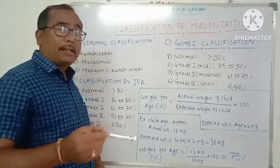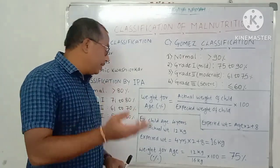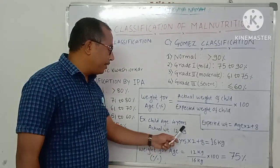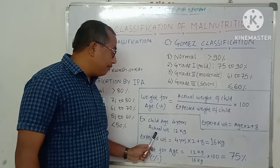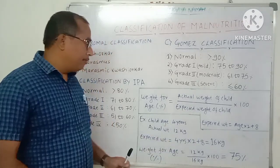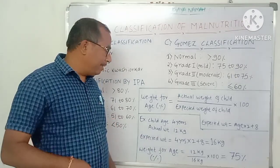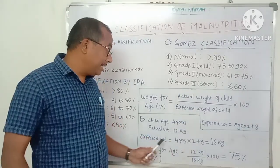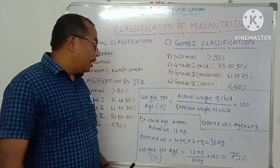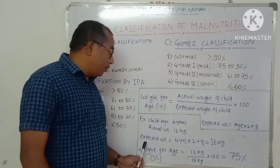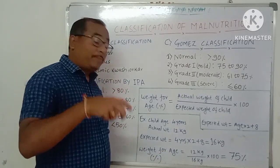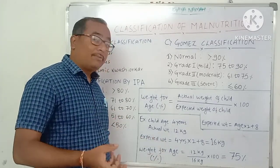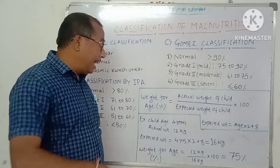Let's take a worked example. Suppose a child comes to the hospital at age 4 years and when you measure the weight, the actual weight is 12 kg. The expected weight of a 4-year-old child is calculated as: (4 × 2) + 8 = 16 kg. So the expected weight is 16 kg, but the child has only 12 kg.